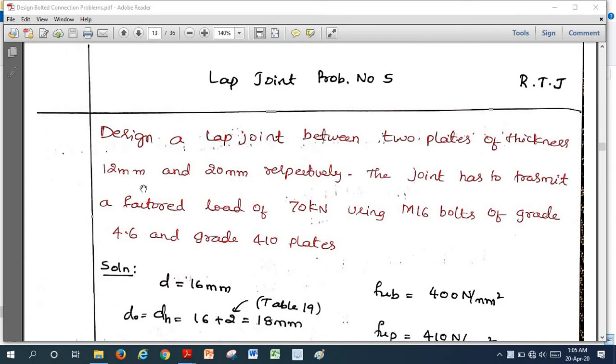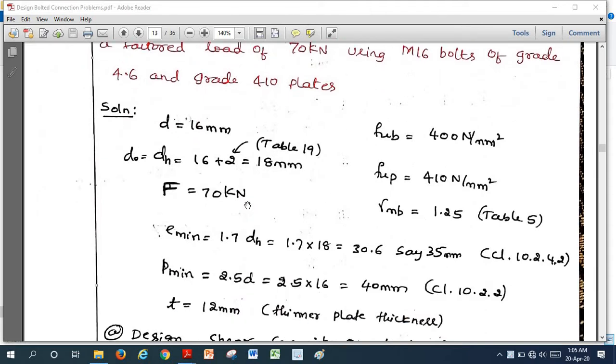Design a lap joint between two plates of thickness 12 mm and 20 mm respectively. The joint has to transmit a factored load of 70 kN using M16 bolts of grade 4.6 and grade 410 plates. This is the given detail.